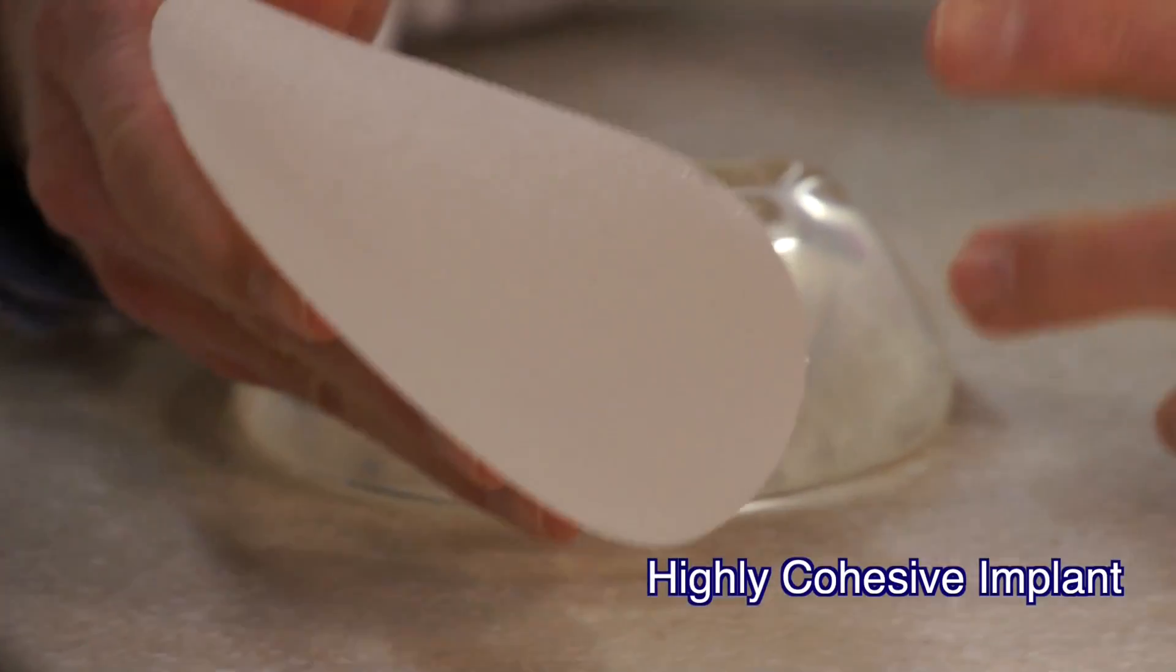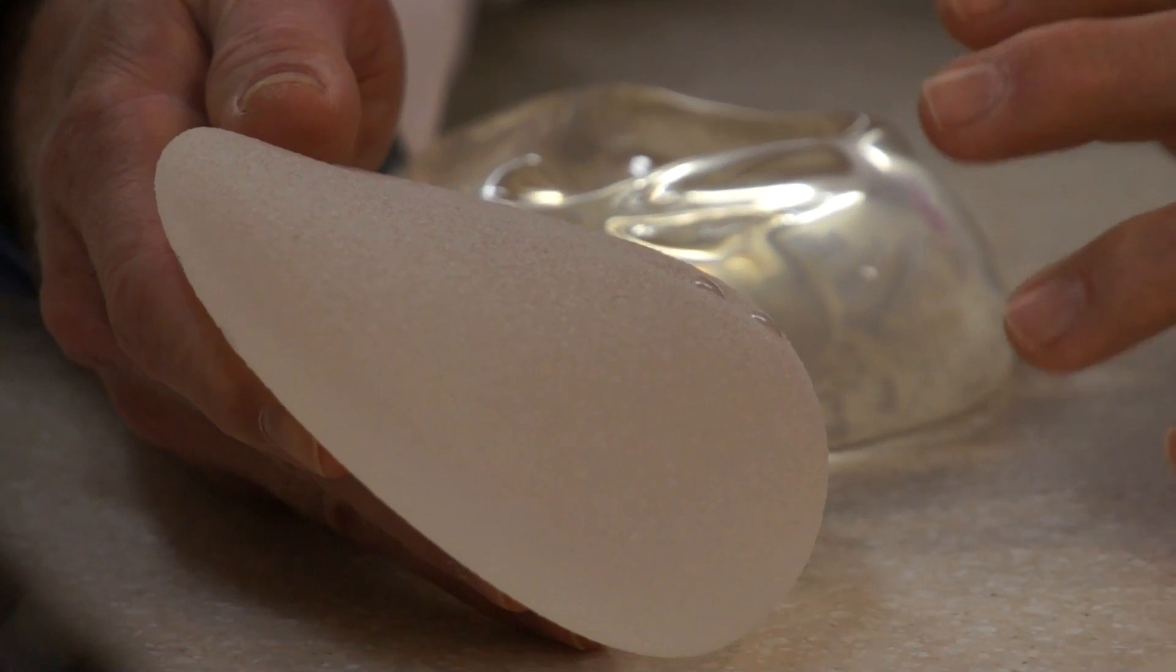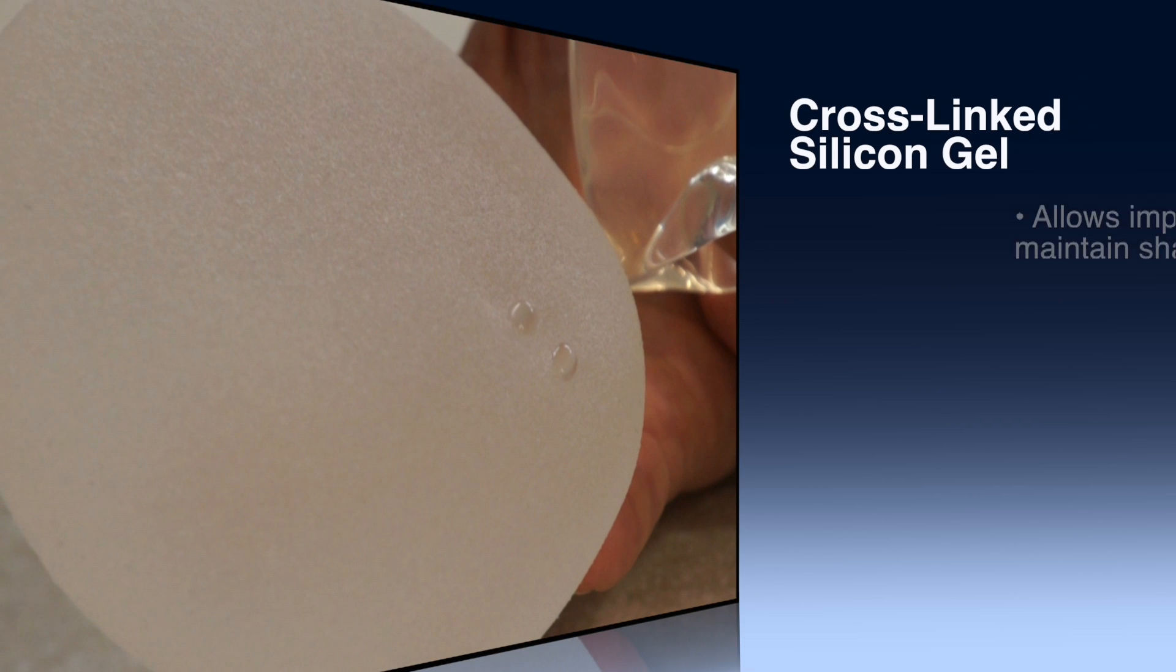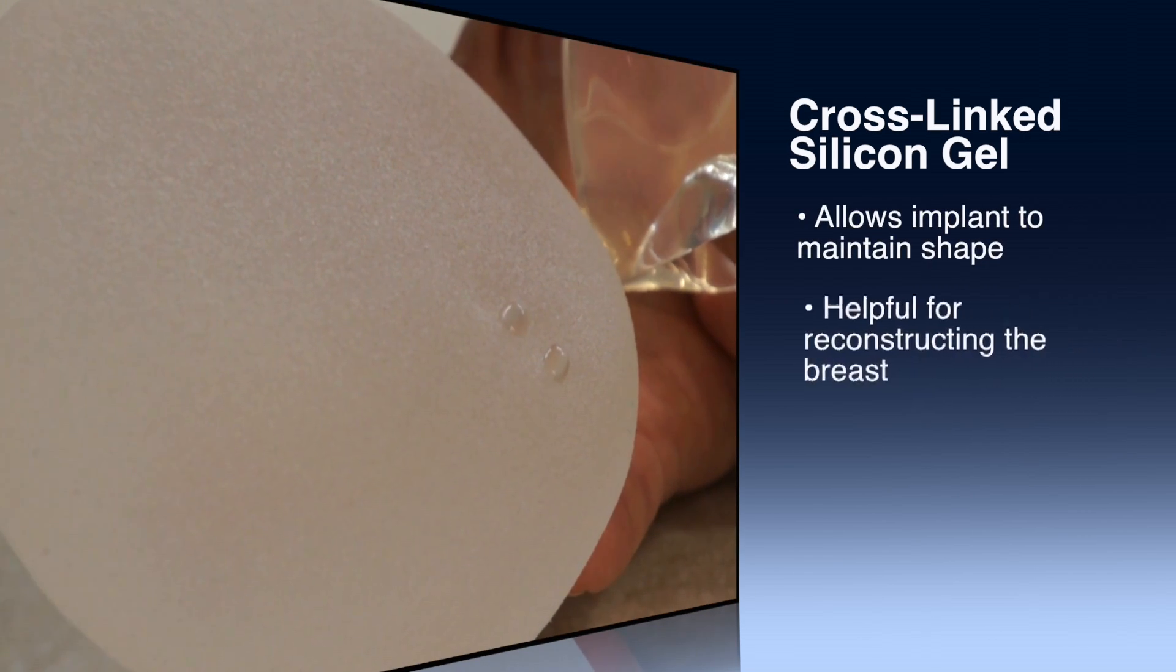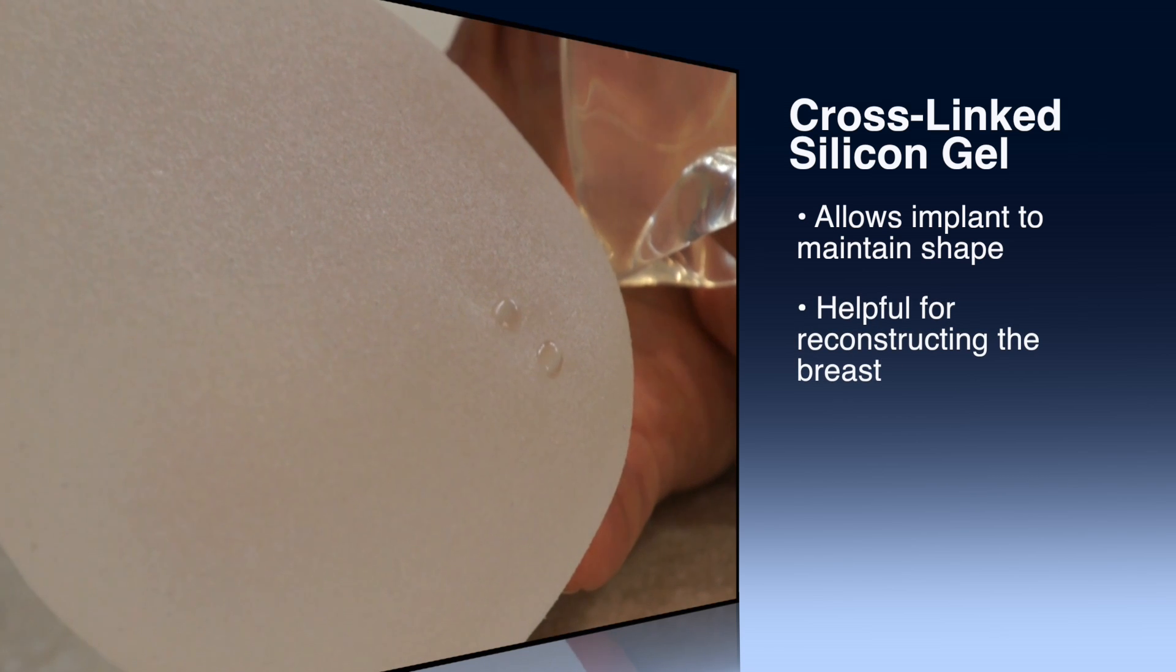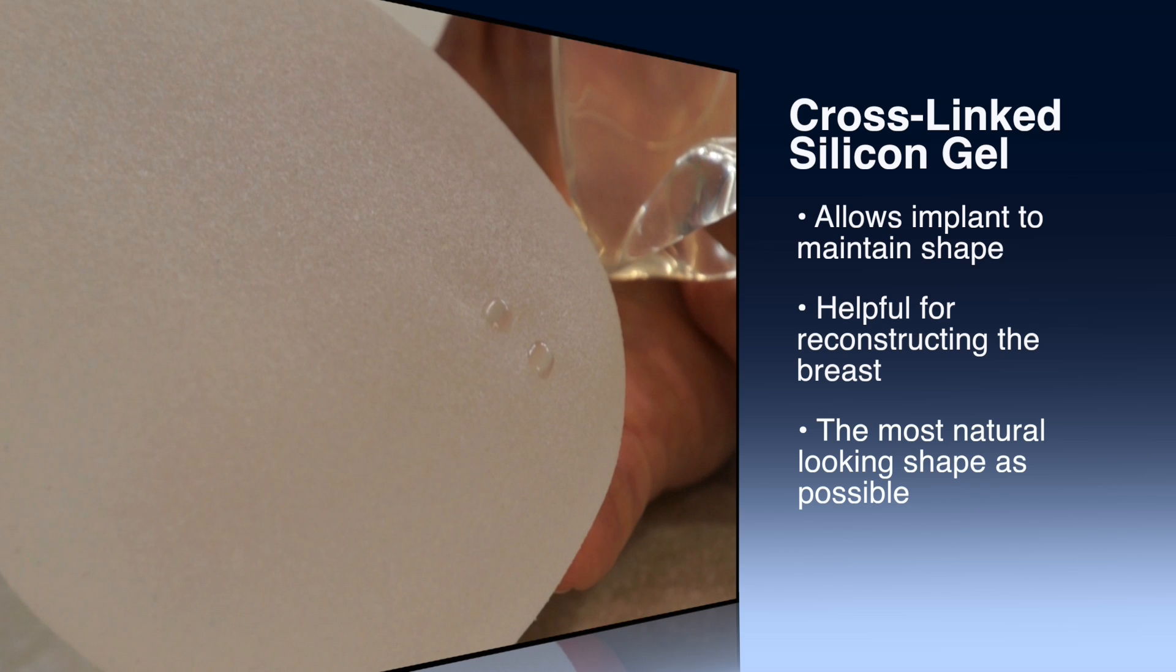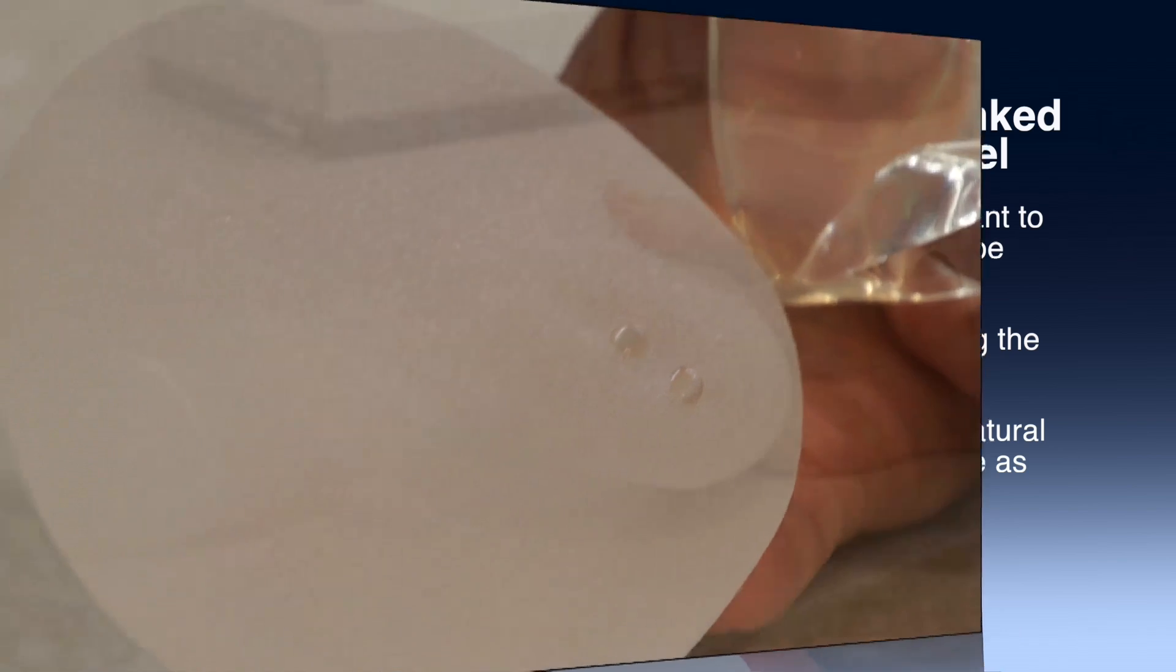It's a highly cohesive implant, and what that means is that the silicone gel is tightly cross-linked and it allows the implant to maintain a shape. That can be very helpful when you're reconstructing a woman's breast and you want to have as natural a look and shape as possible, especially when one is standing and in clothing.